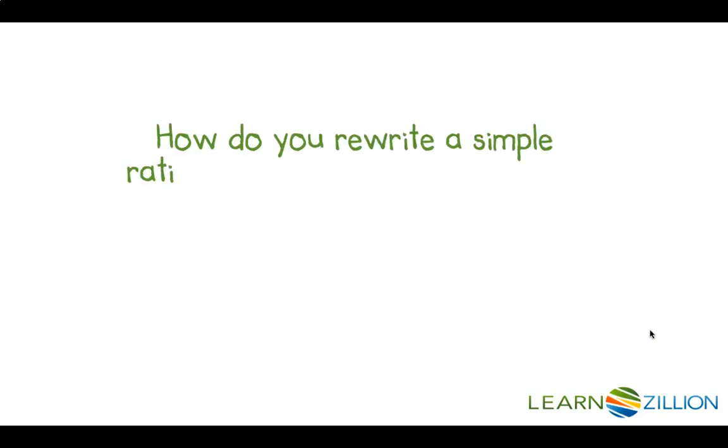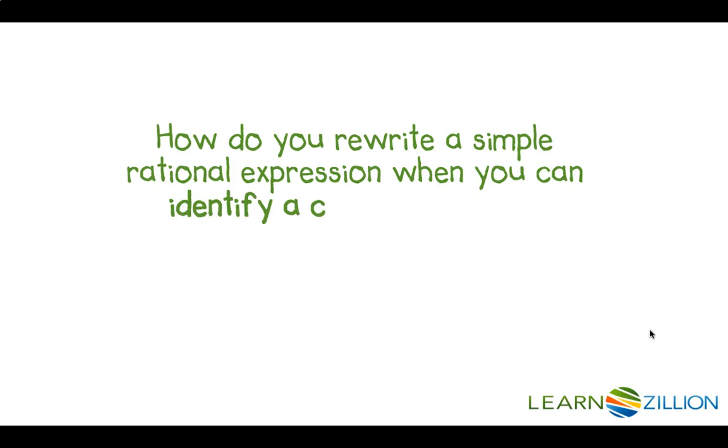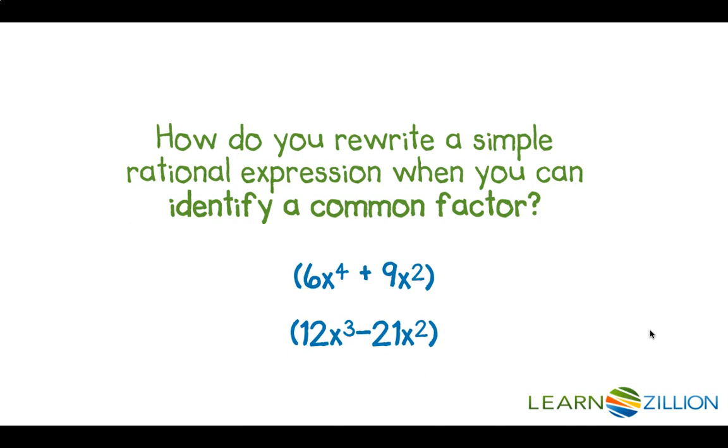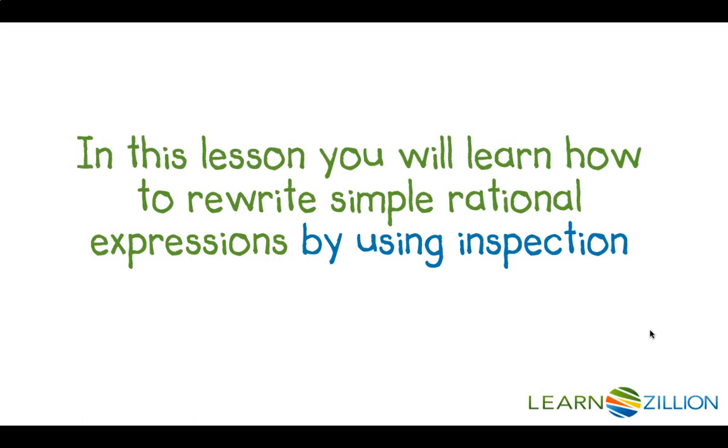How do you rewrite a simple rational expression when you can identify a common factor? For example, we'll be looking at expressions like 6x to the 4th plus 9x squared over 12x cubed minus 21x squared. In this lesson, you'll learn how to rewrite simple rational expressions by using inspection.